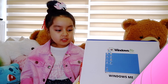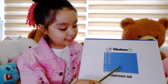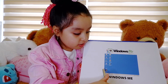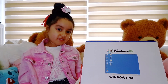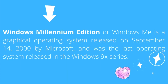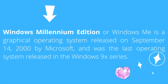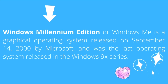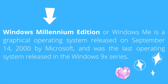The next version of Windows is Windows Millennium Edition, or Windows ME. Windows ME is a graphical operating system released in September 2000 by Microsoft. It is the last operating system released in the Windows 9X series.